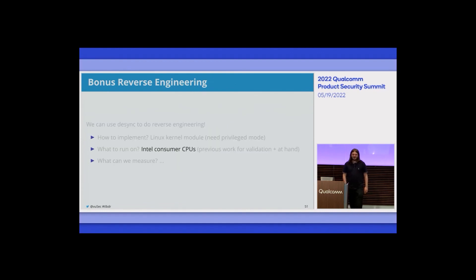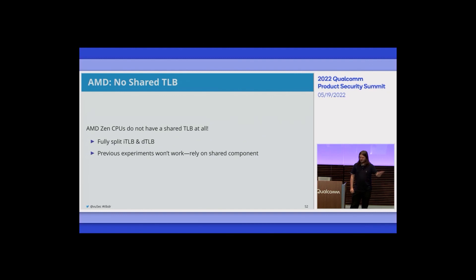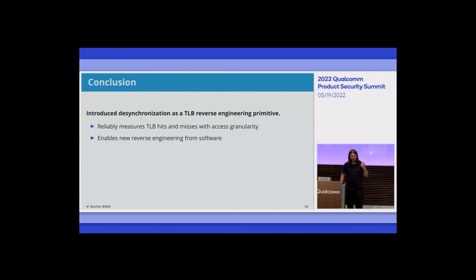We also tried our technique on AMD CPUs. The problem: AMD has a fully split instruction and data TLB with no shared component, unlike Intel, so our previous experiments relying on the shared L2 didn't apply. But when life gives you lemons, make lemonade — we developed new experiments that didn't rely on a shared component and managed to measure topology, set sizes, associativity, hash function bits, and inclusivity on AMD.